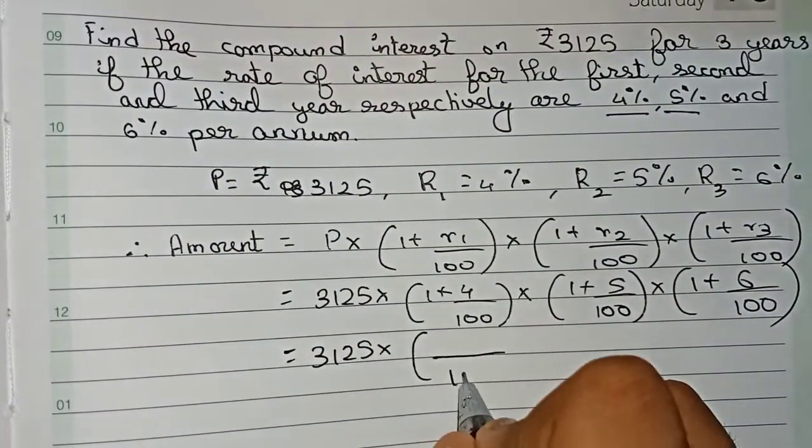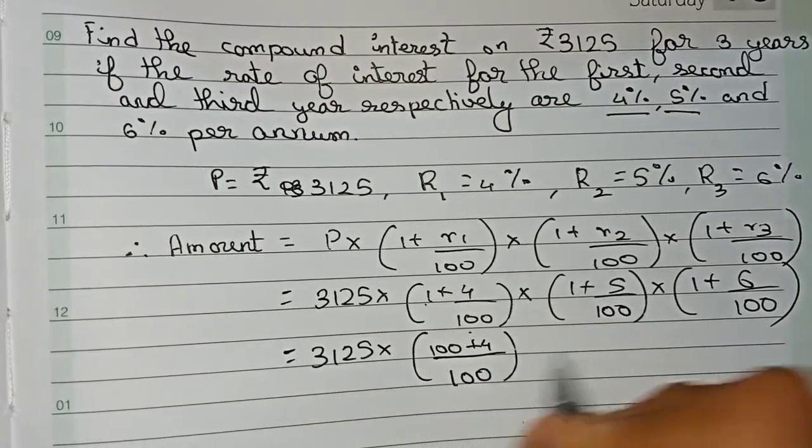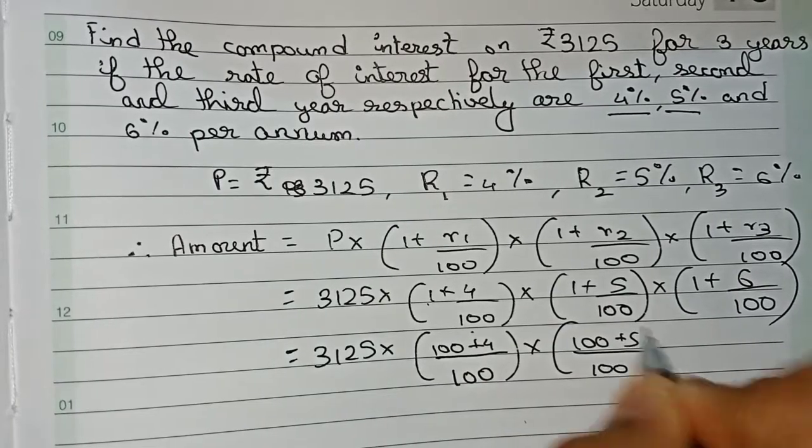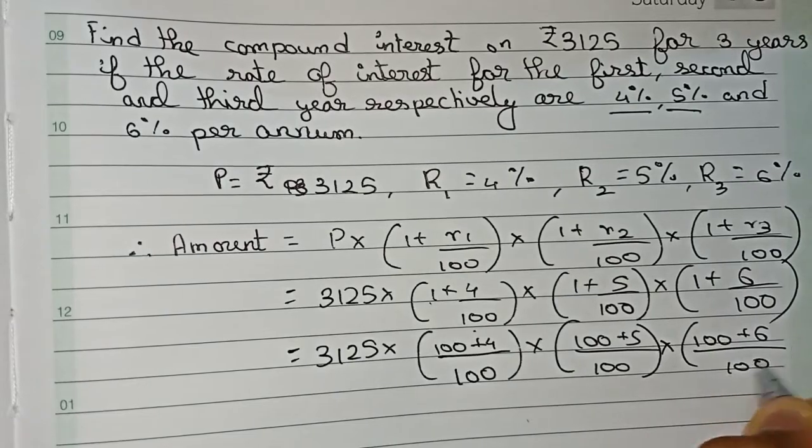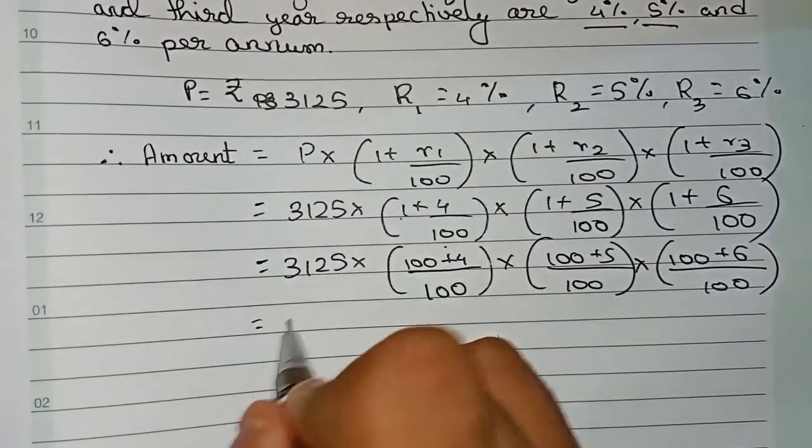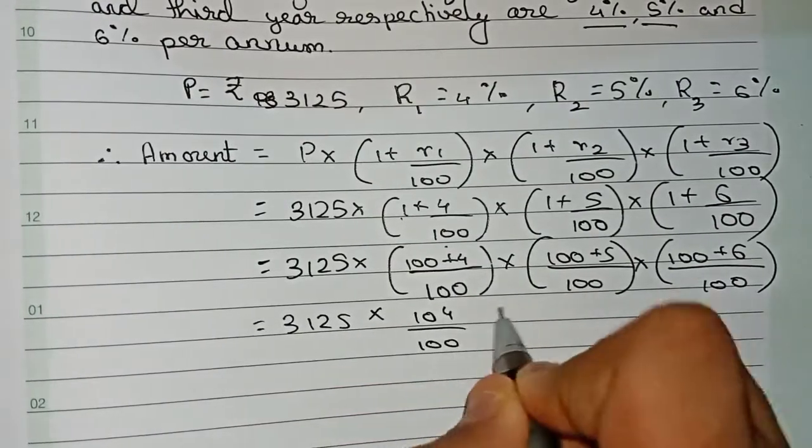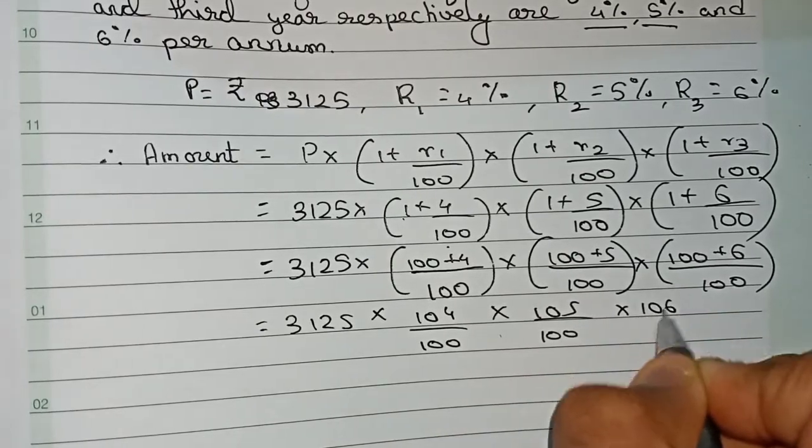Now we are solving the bracket portion. 1 plus 4 by 100, we take 100 as the LCM, so 1 into 100 is 100 plus 4. Similarly, (100 plus 5) by 100 into (100 plus 6) by 100. Now I will remove the brackets. It's equal to 3125 into 104 by 100 into 105 by 100 into 106 by 100.